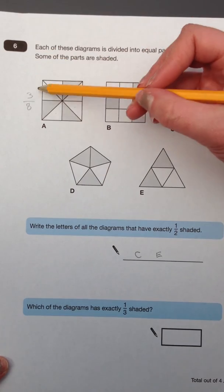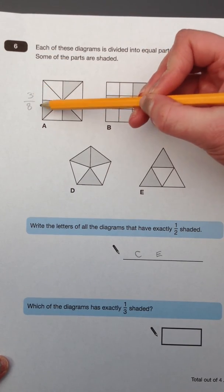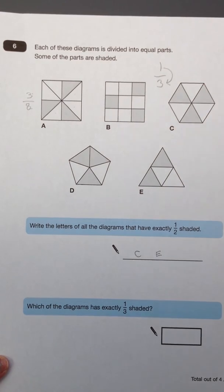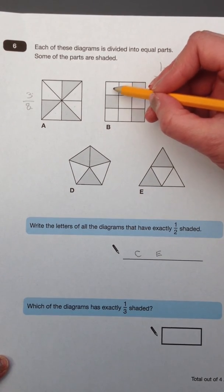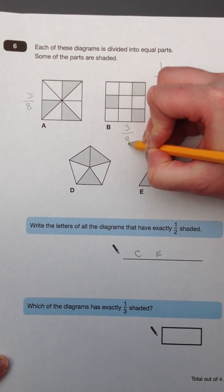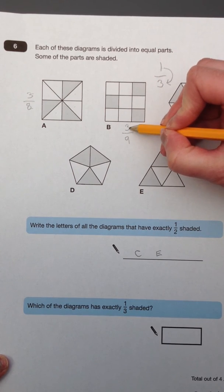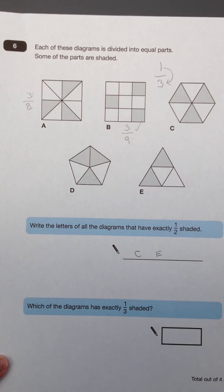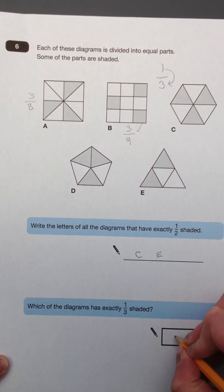So to work out a third, can you multiply the top number by 3 and get the bottom number? For A, no. For B, we've got 3 shaded out of 9. Can you multiply 3 by 3 and get 9? Yes, you can. So that is exactly 1 third. So I'm going to write B in this answer box.